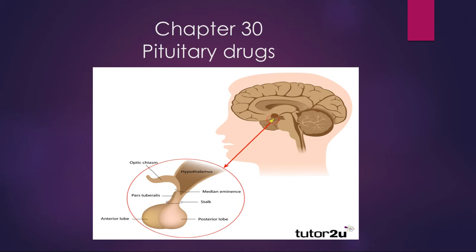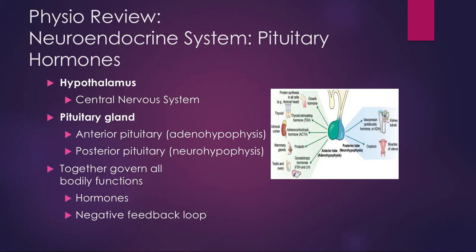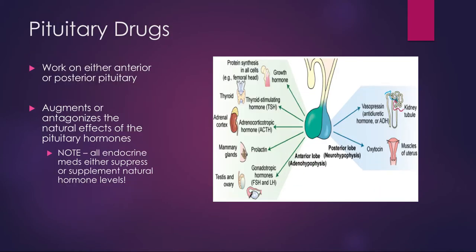A little bit of patho review here. Look at your pituitary hormones. Remember that we've got your hypothalamus first in the endocrine system, then we've got your pituitary gland, anterior and posterior. We've got different hormones coming from the anterior than we have from the posterior. We've got antidiuretic hormone and oxytocin from your posterior lobe, and then we've got a bunch of them from the anterior lobe.